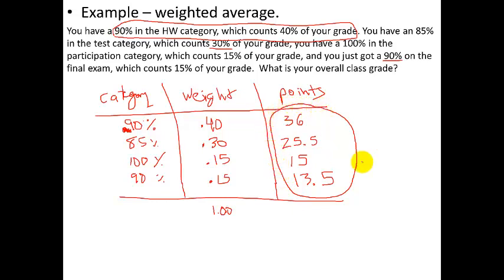Now if I add all of these up, I can get my total score. 36 plus 25.5 plus 15 plus 13.5 equals, hey, it's a 90%. Who would have guessed? I didn't know that, actually. I promise. When I made it up, I just picked random numbers. So the weighted average is 90. I add all my points up, total, I get 90.